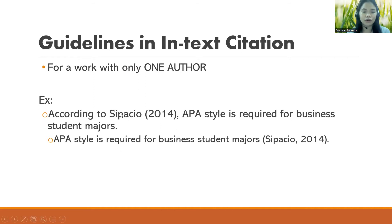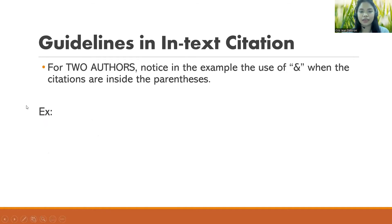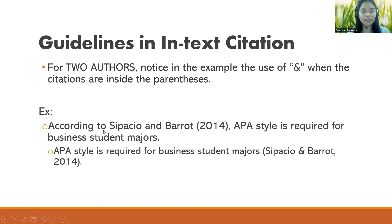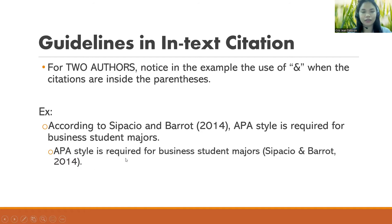Those are the two ways of citing authors. There are times when there is only one author — just follow the format. Now, for resources with two authors, notice the use of the ampersand symbol (&). When the citations are inside parentheses, use ampersand. In the first example, two authors are connected with the word 'and' when cited outside parentheses. In the second example, when both are inside parentheses, the ampersand is used instead of spelling out 'and,' followed by the year.